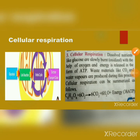Cellular respiration: dissolved nutrients like glucose are slowly burnt (oxidized) with the help of oxygen, and energy is released in the form of ATP. Waste materials like carbon dioxide and water vapor are produced during this process. Cellular respiration can be summarized as: C₆H₁₂O₆ + 6O₂ → 6CO₂ + 6H₂O + energy (38 ATP).